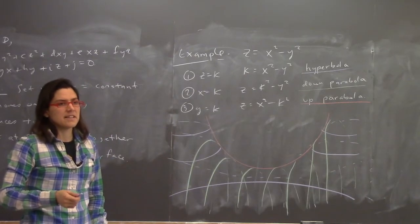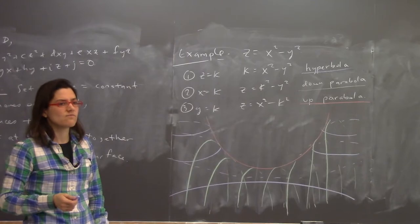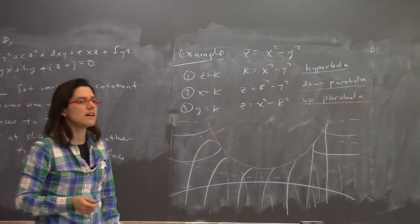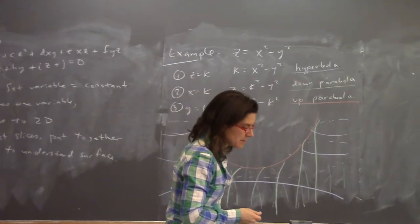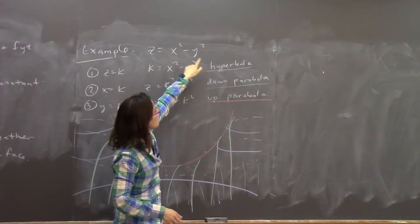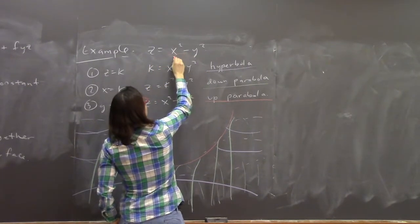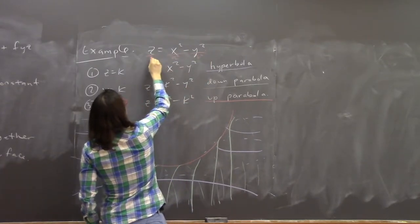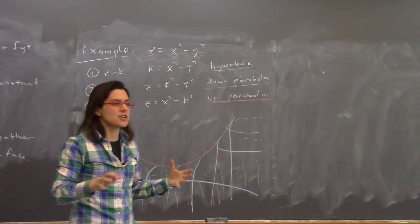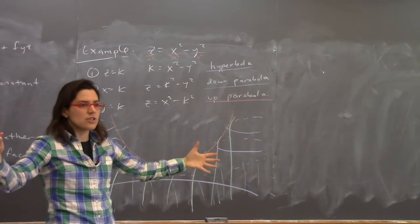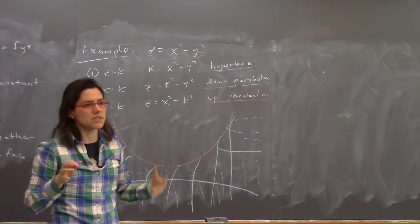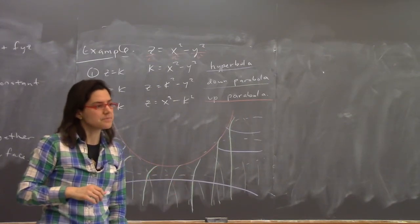I could have also included constants — dividing or multiplying by some constants on z, x squared, or y squared. That wouldn't change the actual shape, just compress it in one direction. So it doesn't change what the surface fundamentally is, just what it looks like.